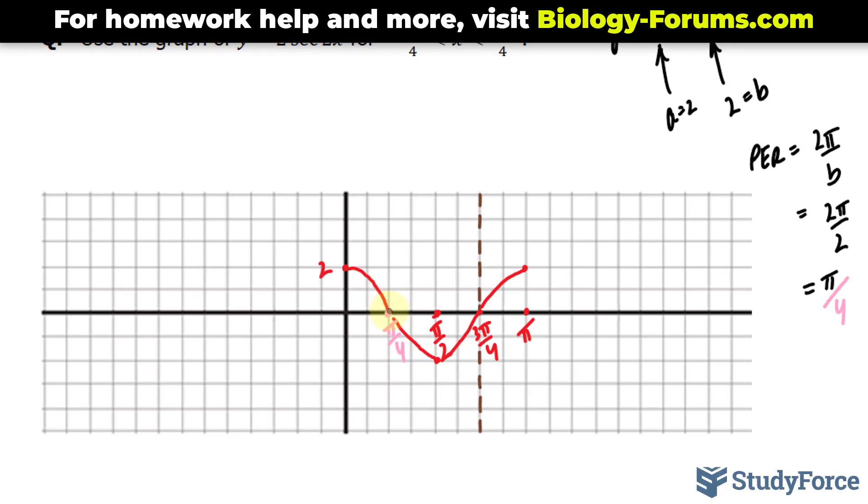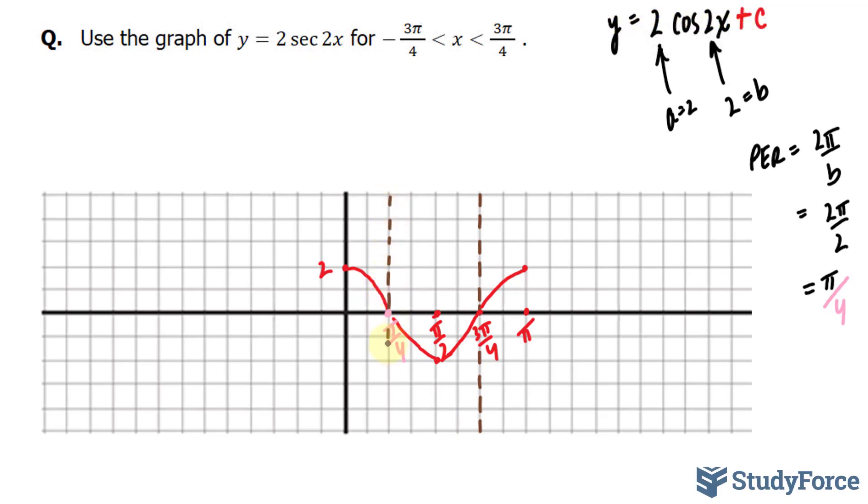And this happens to be one of our x-intercepts. This means that we will have an asymptote right here. In addition, we'll have another asymptote right here because this is your x-intercept. Let's continue graphing this this way.